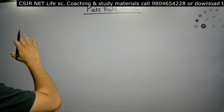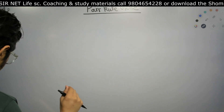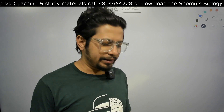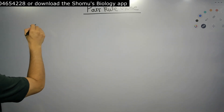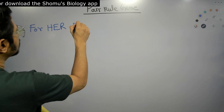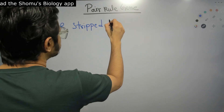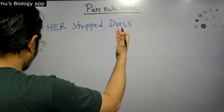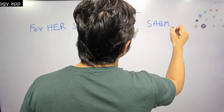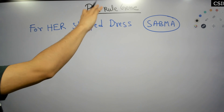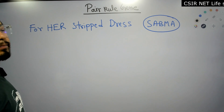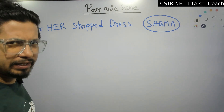To remember the pair rule genes, we need to recall one simple sentence about someone who really liked their striped dress — and that is Sabma. Sabma is the name of that woman who loved her striped dress. The sentence is: 'For her striped dress, Sabma.' If you can remember this, you can remember all the different genes related to the pair rule genes, their roles, and what mutations to them lead to.